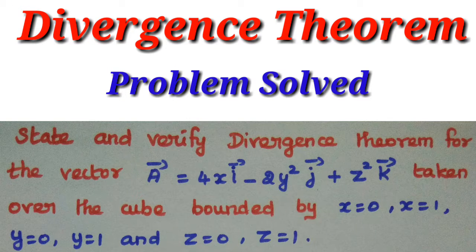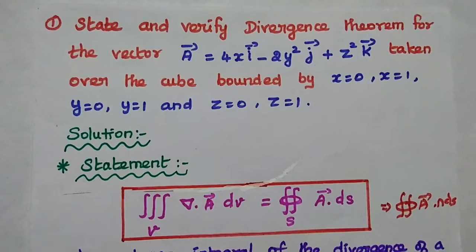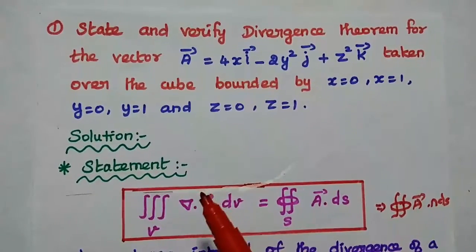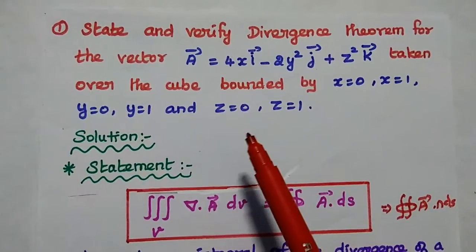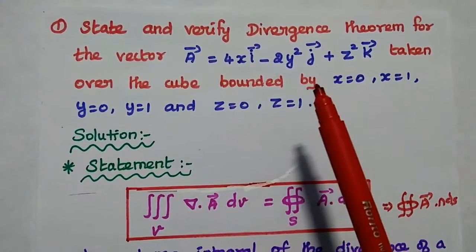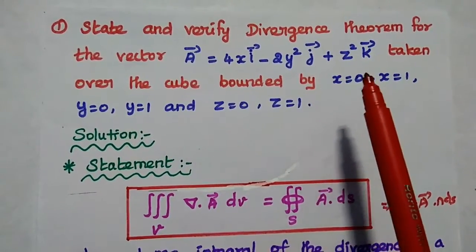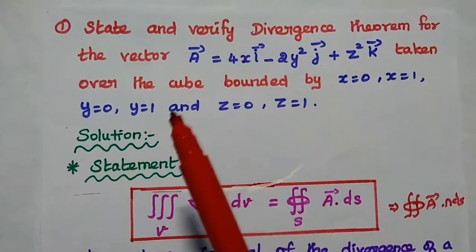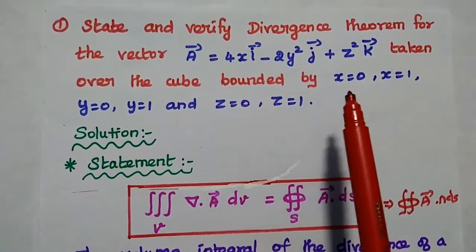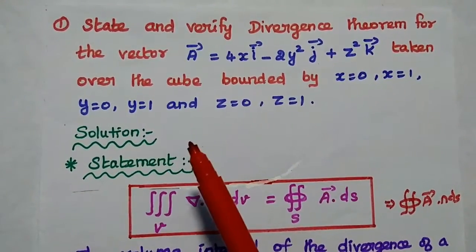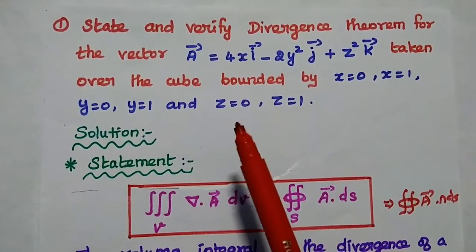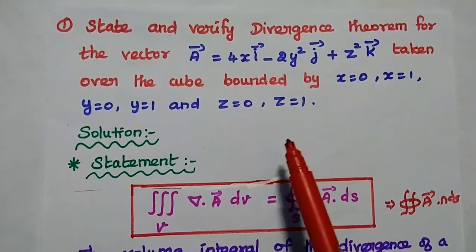Dear students, now we are going to solve an important problem in divergence theorem with proof. State and verify the divergence theorem for the vector A equal to 4x i-vector minus 2y² j-vector plus z² k-vector, taken over the cube bounded by x=0, x=1, y=0, y=1, z=0, z=1.